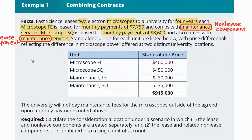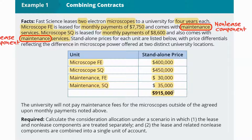The standalone prices for each unit are listed, with price differentials reflecting the difference in microscope power at two distinct university locations. The standalone price of Microscope FE is $400,000, and that of Microscope SQ is $450,000, whereas maintenance for FE would cost $30,000 and that of SQ would cost $35,000, for a total standalone price of $915,000. The university will not pay maintenance fees outside of the agreed-upon monthly payments.